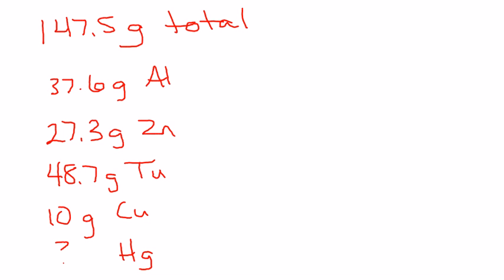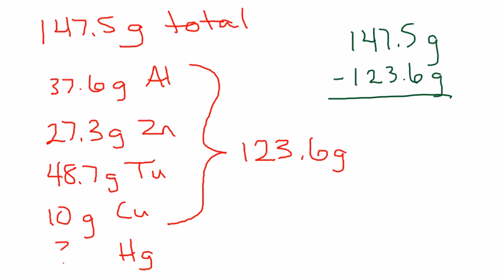We want to calculate the grams of mercury in the sample. To do this, all we're going to have to do is add these four amounts up and then subtract from 147.5. So I'm going to do this on my calculator. 37.6 plus 27.3 plus 48.7 plus 10, and I get 123.6 grams. If I take 147.5 grams minus 123.6 grams, that gives me 23.9 grams of mercury. And that should be my answer. That's number one.